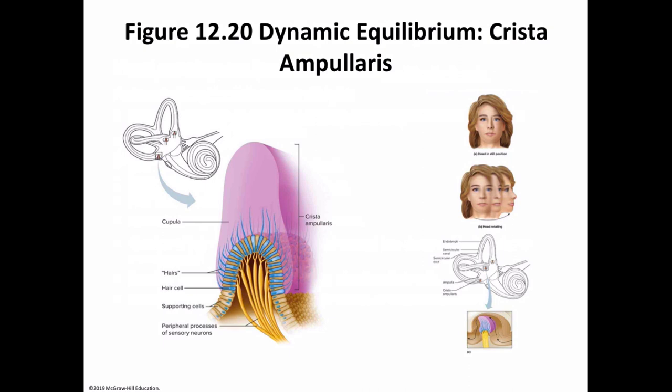Motion sickness is thought to result when visual information — what you see — contradicts the inner ear sensation when moving. For instance, if you're reading in a car, the inner ear says you're moving as the car responds to turns, changes in speed, and uneven road surfaces, but the eyes are following the lines of the book, which appears motionless. The brain reacts to those contradictory sensations with feelings of nausea — that is the definition of motion sickness: a sensory mismatch.